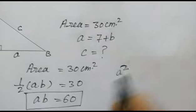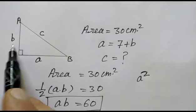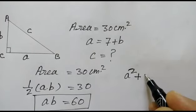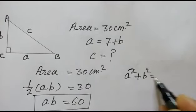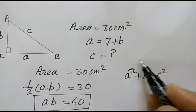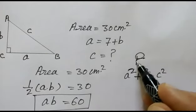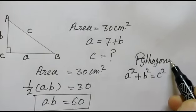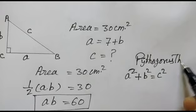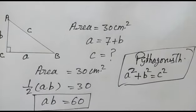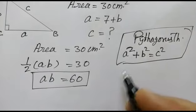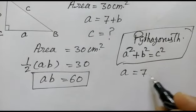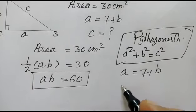A square plus b square equals c square - base square plus perpendicular square equals hypotenuse square, Pythagoras theorem. As we have given, a is equal to 7 plus b, so a minus b is equal to 7.